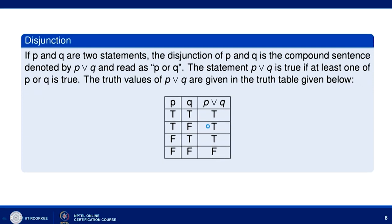Disjunction: if P and Q are two statements, the disjunction of P and Q is the compound statement denoted by P or Q. The statement P or Q is true if at least one of P or Q is true. From the truth table: if P is true and Q is true, P or Q is true; if P is true and Q is false, P or Q is true; if P is false and Q is true, P or Q is true; if P is false and Q is false, P or Q is false.